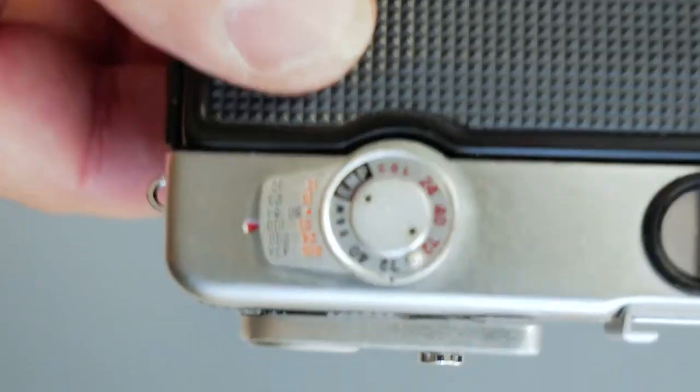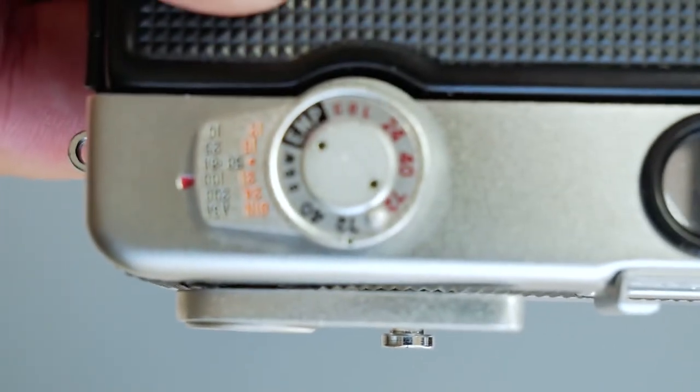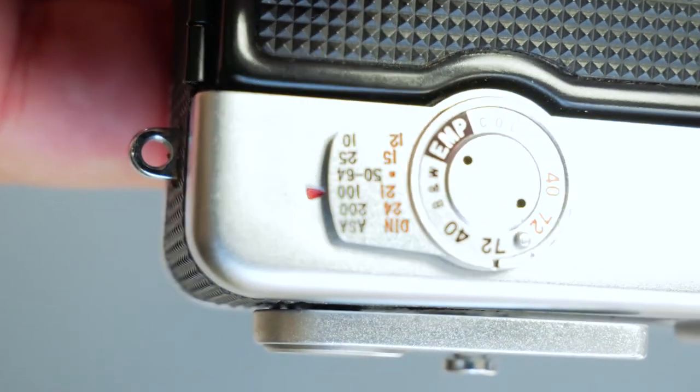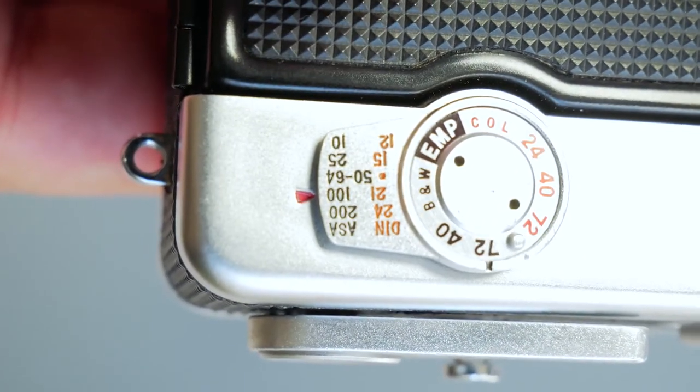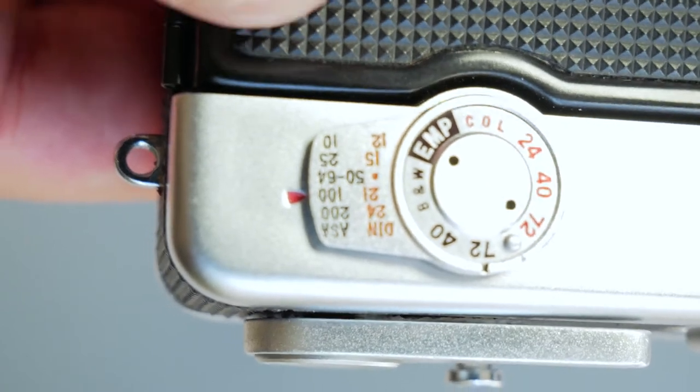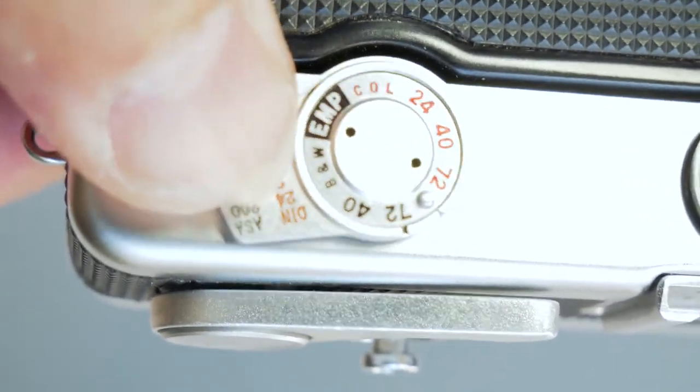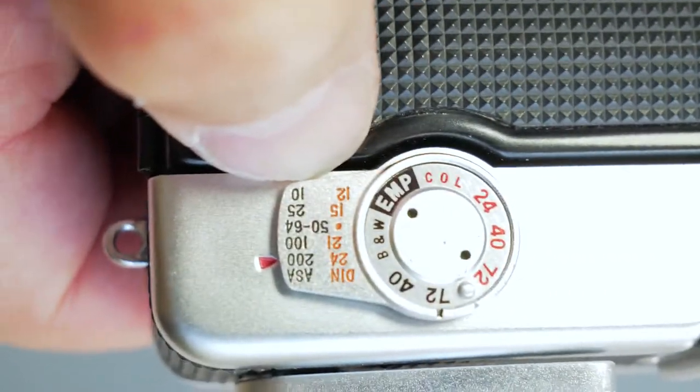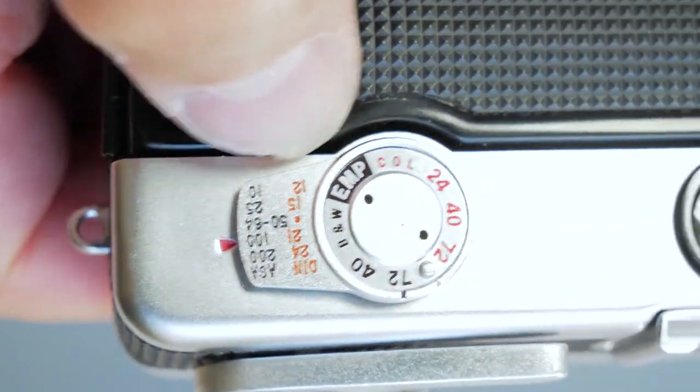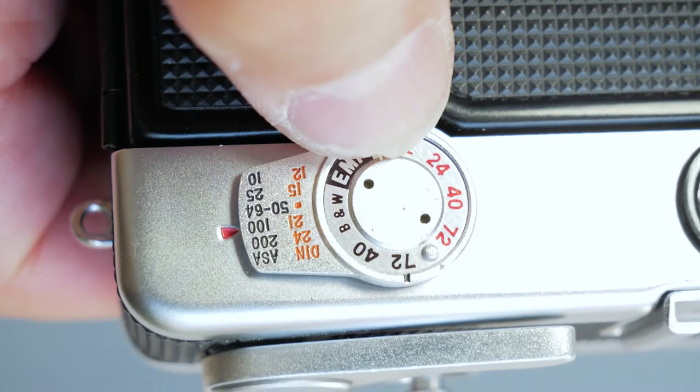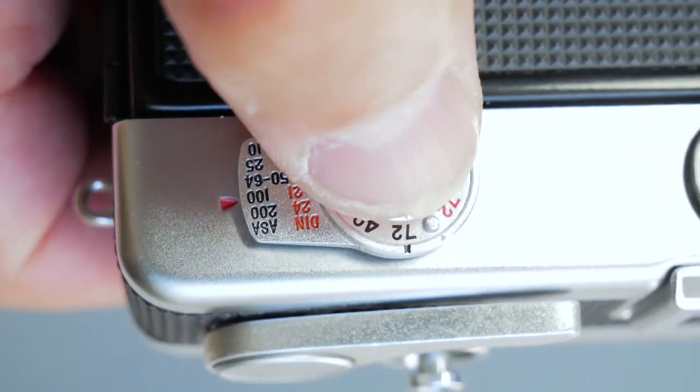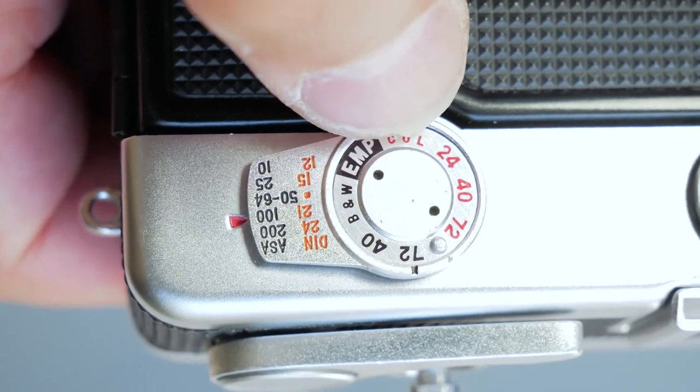On the back, this is where you set film speed. As you can see, it only goes up to 200. You just change to whatever film speed you want. And then this one here is to remind you of how many frames you've got - 72, 40, or 24.